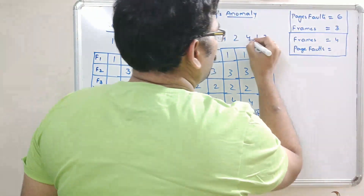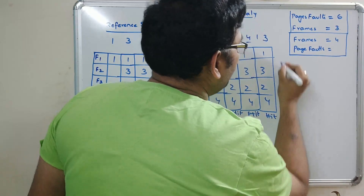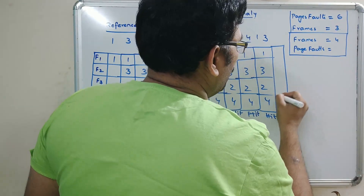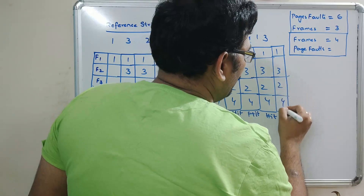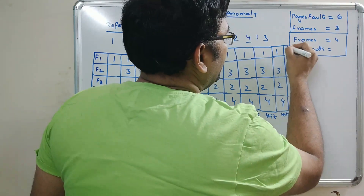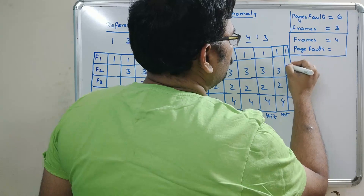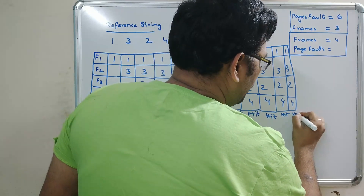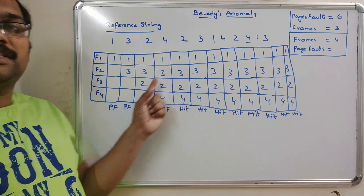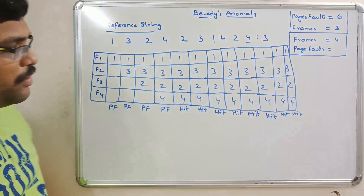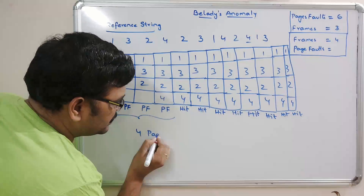Page 4 is also available — no page fault, again a hit. Next, page 1 is also available — hit. Page 3 is also available — again a hit. After completing the entire reference string, there are only 4 page faults.